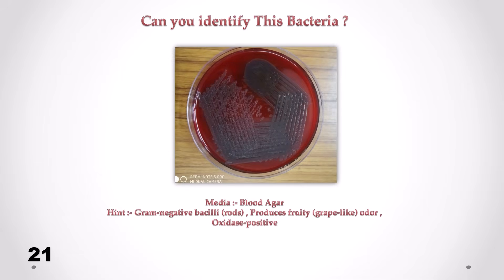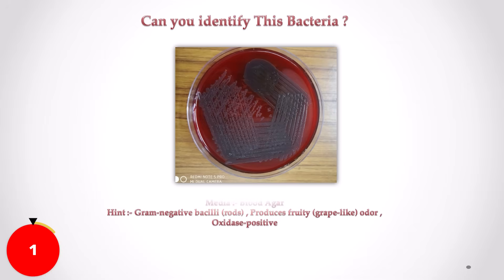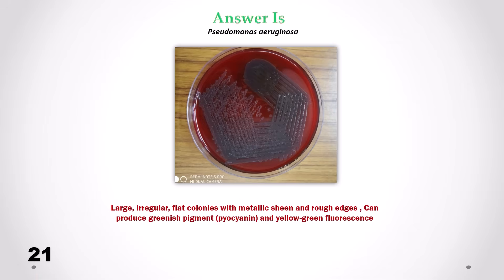Can you identify this bacteria? Correct answer is Pseudomonas aeruginosa. We can see large, irregular, flat colonies with metallic sheen and rough edges. Pseudomonas aeruginosa can produce greenish pigment pyocyanin and yellow-green fluorescence.